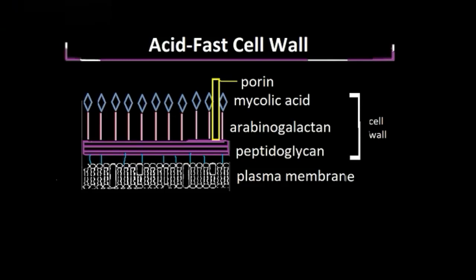Hi, in this video we'll be quickly discussing the acid-fast cell wall. Let's get started. At the base here, we have the plasma membrane, which regulates what can enter and exit the cell.